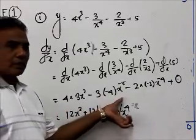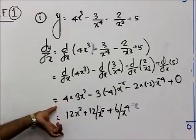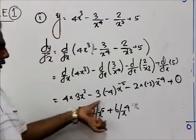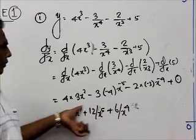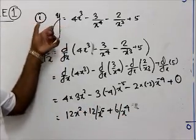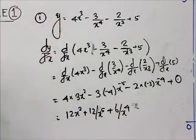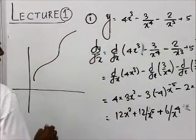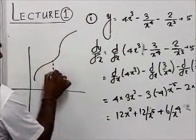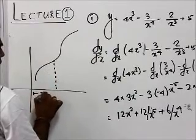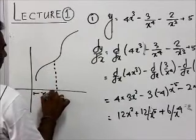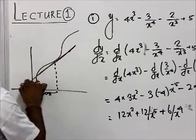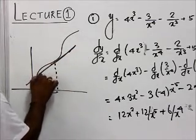What is the meaning of this result? It gives the gradient of this function at any point. The given equation represents one curve, and if we evaluate dy/dx at x = 2, that gives us the tangent gradient at that point on the curve.